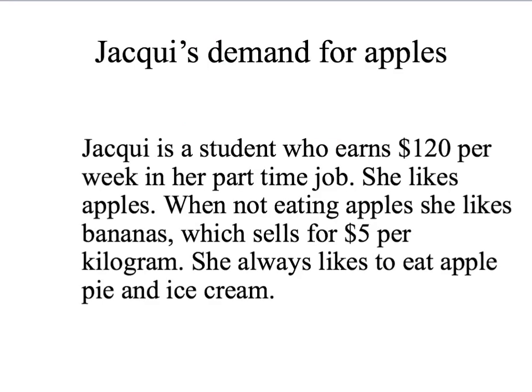The first thing we need to do is identify our person. Our consumer is going to be Jackie. She is going to have a demand for apples. She's a student with an income of $120 per week from her part-time job, and she likes apples. But she also likes eating some other things, such as bananas, which sell for $5 per kilogram. We're going to be holding the price of bananas fixed when we draw the demand curve for apples. She also likes to eat apple pie and ice cream. Ice cream is a product she likes to have with apples, and for the moment we're going to be holding the price of ice cream fixed.